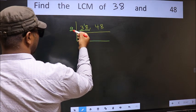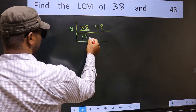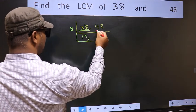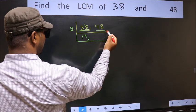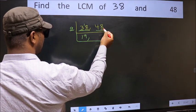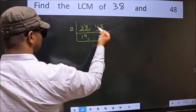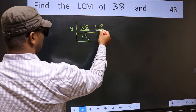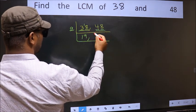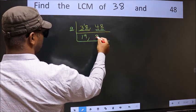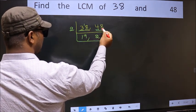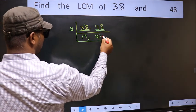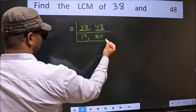When do we get 18 in the 2 table? 2 times 9 is 18. For the other number 48, the last digit is 8, so it is divisible by 2. The first digit is 4 — 2 times 2 is 4. The other digit is 8 — 2 times 4 is 8.